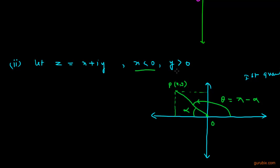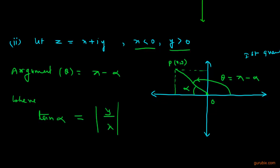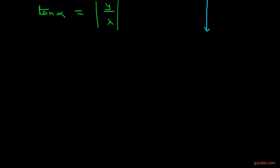In this condition, when x is negative — meaning the real part is negative — and the imaginary part is positive, then the argument θ = π − α, where tan α = |y/x|, with y being the imaginary part and x the real part.